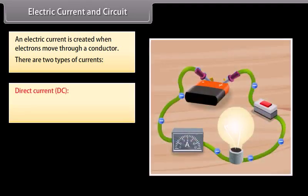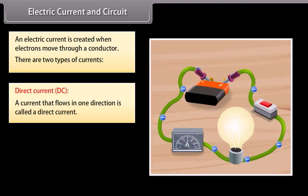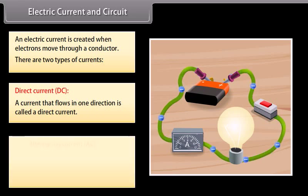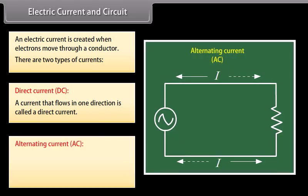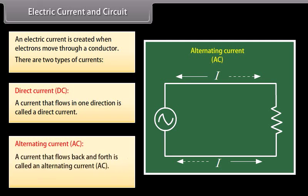Direct current, DC: a current that flows in one direction is called a direct current or DC. For example, a battery produces a direct current. Alternating current, AC: a current that flows back and forth is called an alternating current or AC. The symbol of electric current is I.